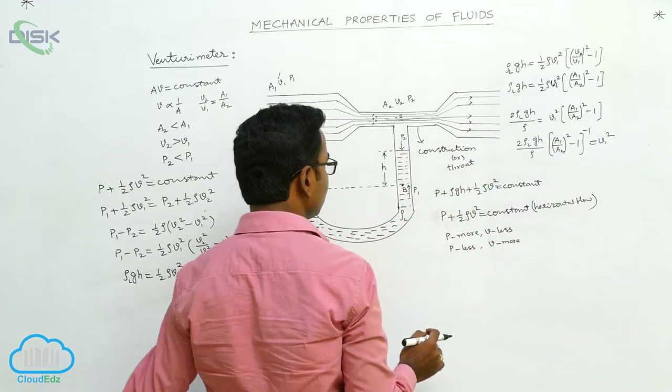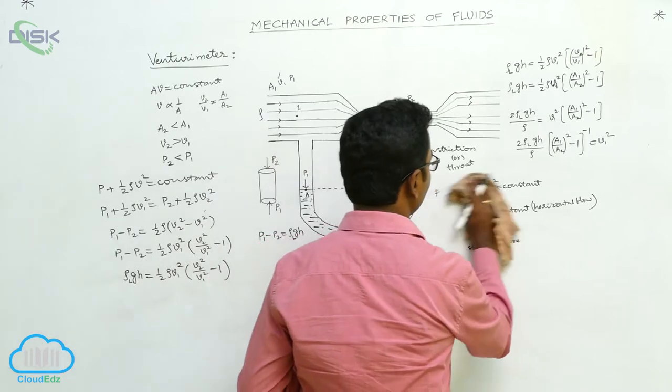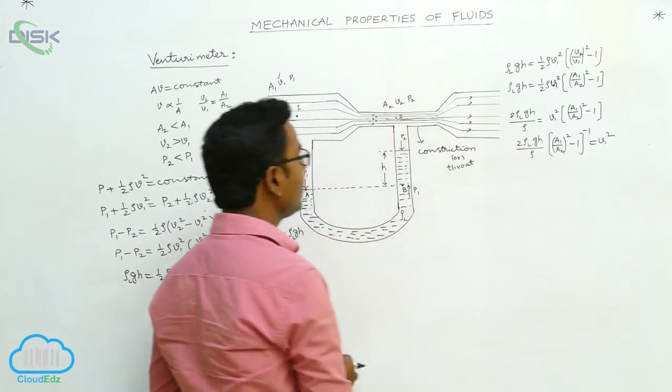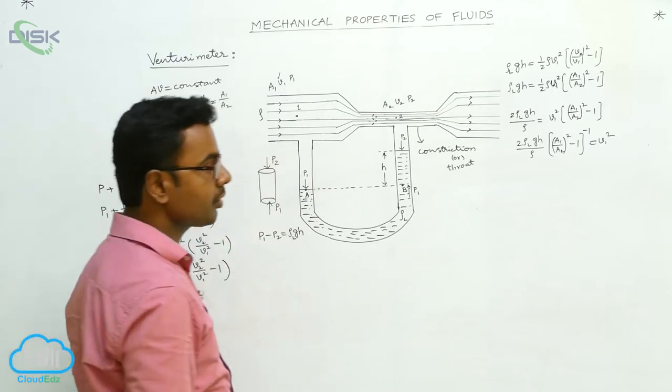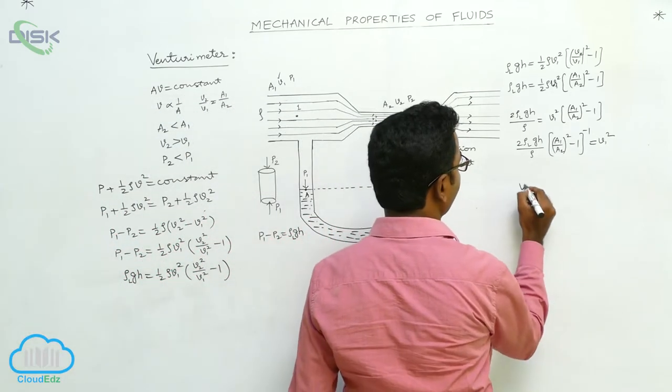Now here we have to find the V1 value. V1 means velocity of fluid flow. Here using venturometer we are finding the velocity of fluid flow. Then V1 is equal we can write.